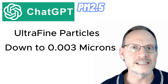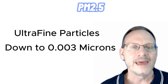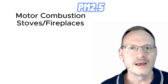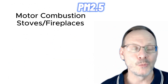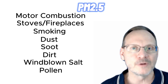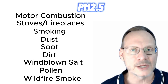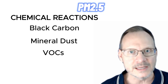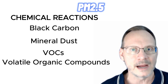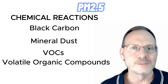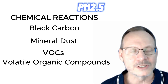PM2.5 can remain suspended in the air for long periods of time and can be absorbed deep into the bloodstream upon inhalation. Examples of PM2.5 particles include motor combustion, stoves, fireplaces, home wood burning, smoking, dust, soot, dirt, windblown salt, pollen, and smoke from wildfires. It can also include some chemical reactions between gases such as black carbon, mineral dust, and VOCs — volatile organic compounds — which are typically off-gassing from man-made products like the smell of a new car, new paint on the wall, or new carpeting.